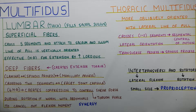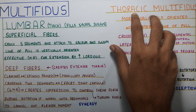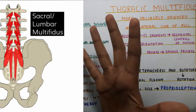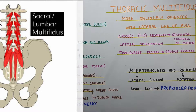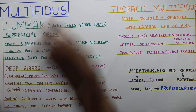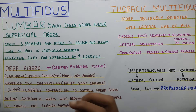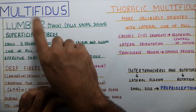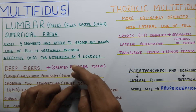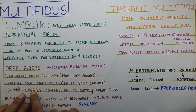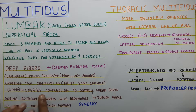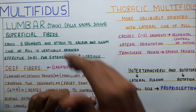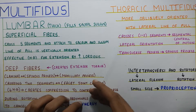Moving on to the multifidus. It has two parts: thoracic and lumbar. The lumbar multifidus has superficial and deep fibers. The superficial fibers cross five segments and attach to the sacrum and ilium. Their line of pull, unlike the erector spinae, is very vertically oriented, so their moment arm is very effective — hence they create extension and good lordosis in the lumbar spine. The deep fibers have a very short moment arm because they are deeper, which creates compression to control the shear forces and torsion forces present on the lumbar spine.